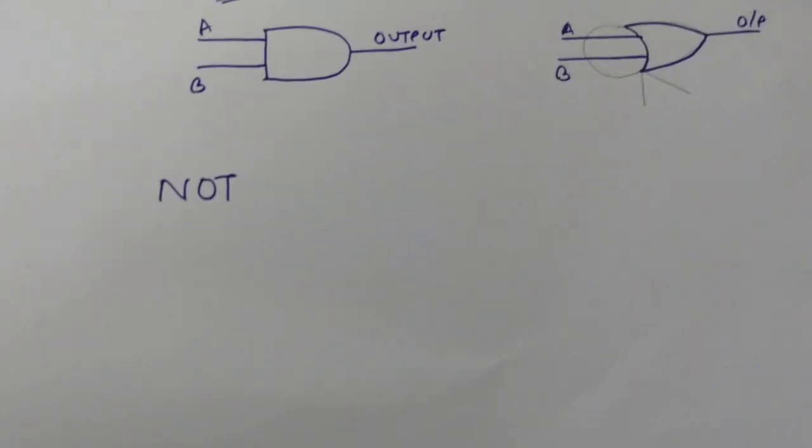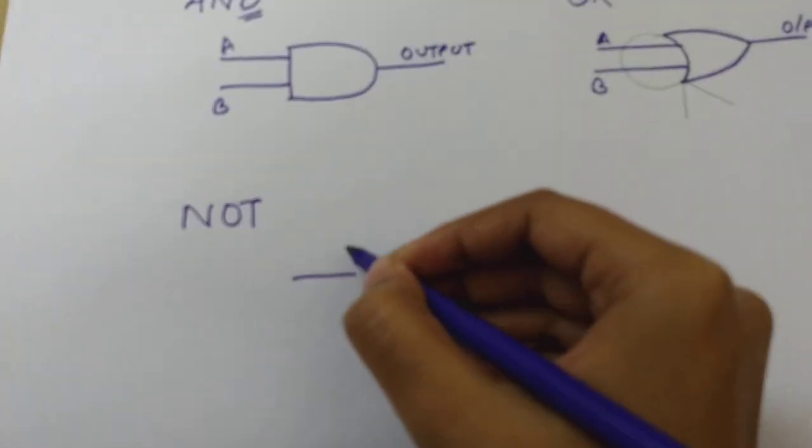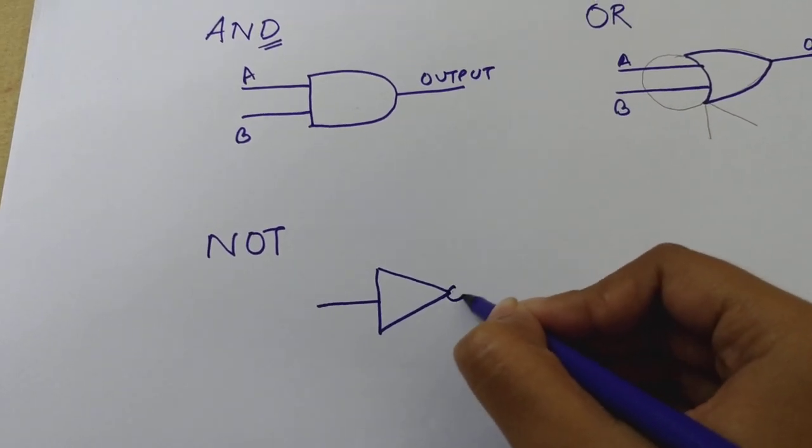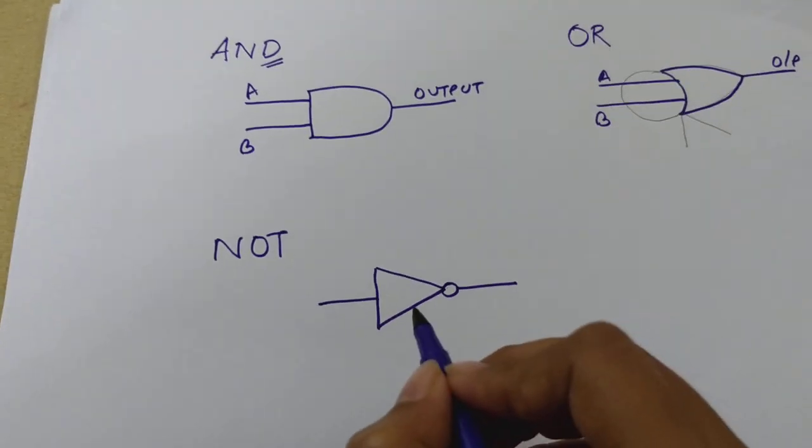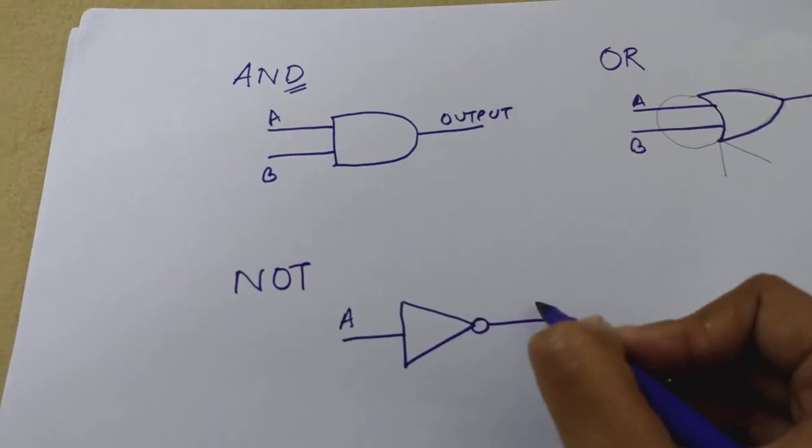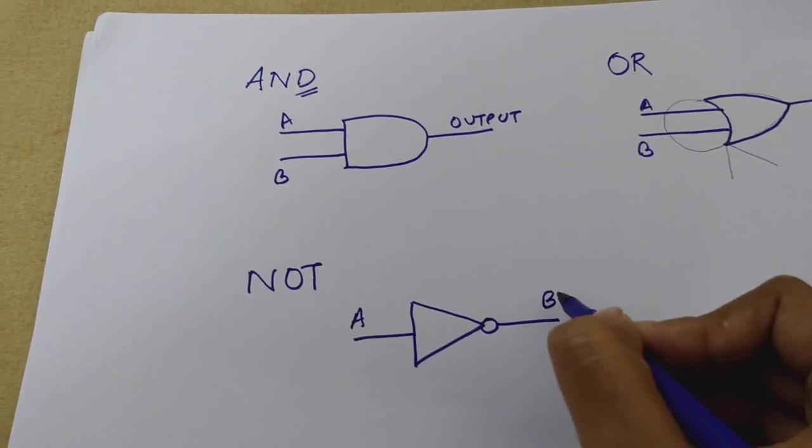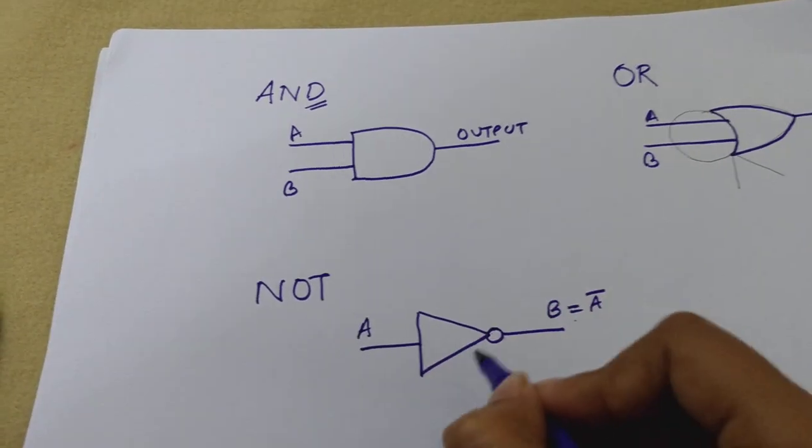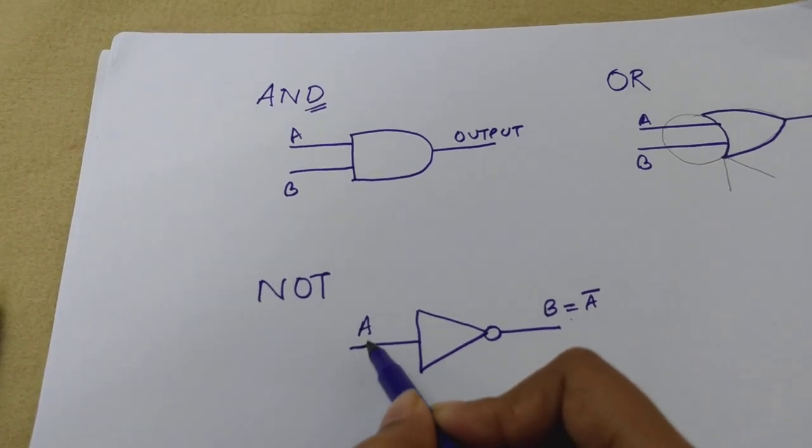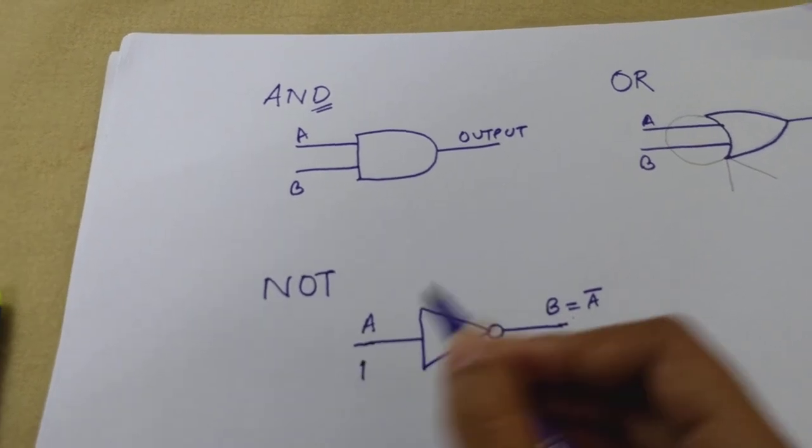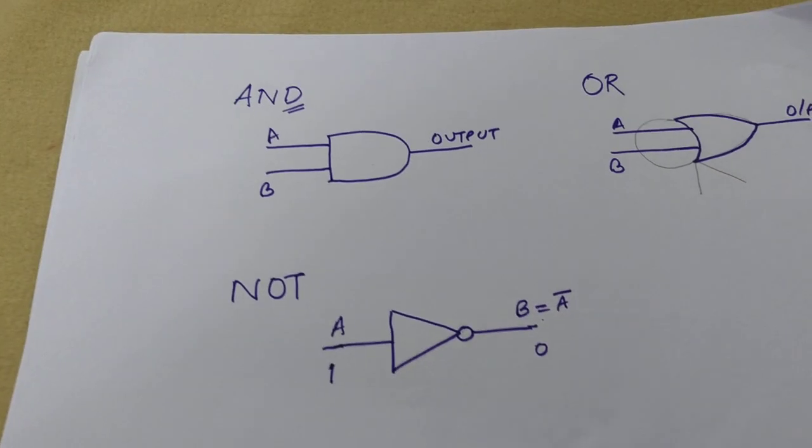And for NOT gate, it has only two terminals because whatever is the input here, the opposite will be the output. It's an inverted gate, inverting gate. That means whatever comes here will be inverted. If the input is one, it will be zero here.